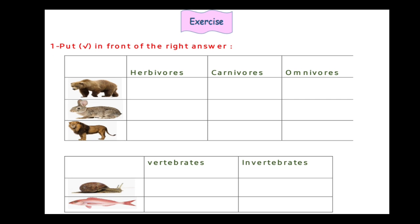Let's try it. Look at the first picture, Junior 2. It's bear. Is bear from herbivores? No. Is bear from carnivores? No. Is bear from omnivores? Yes. Bear is from omnivores because bear eats both plants and meat. Put a tick on omnivores.